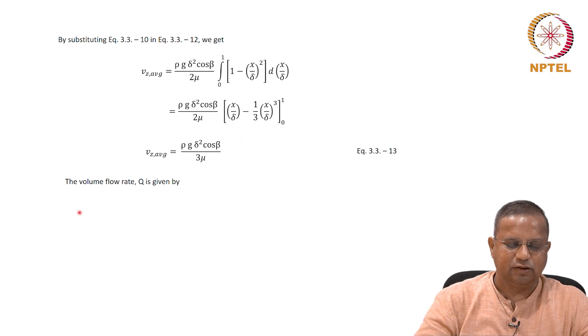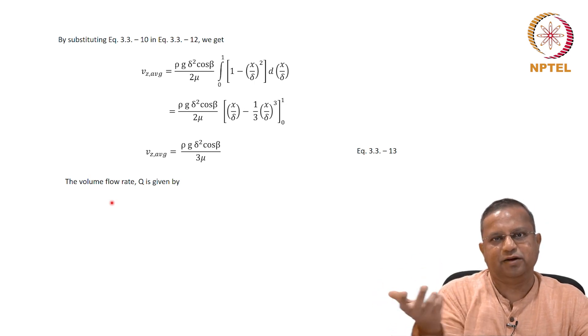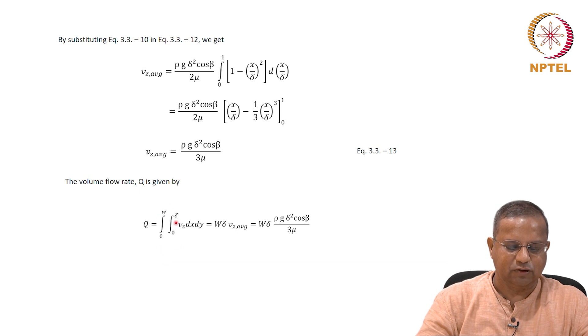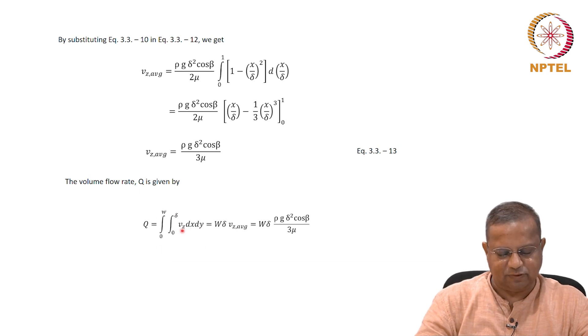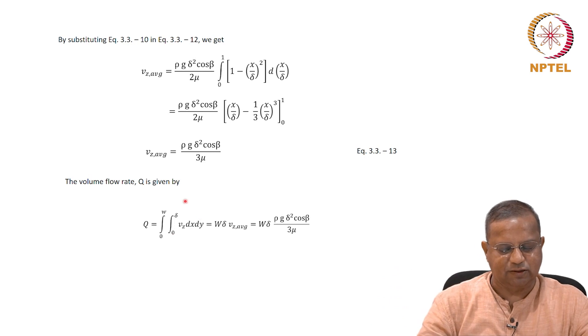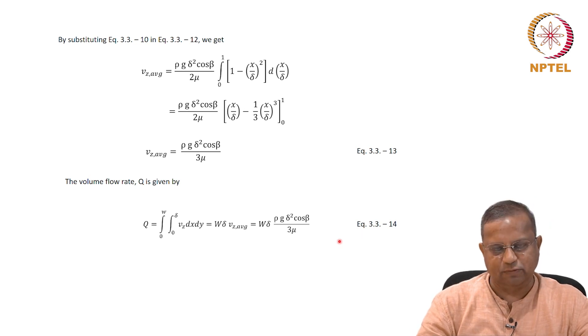We are also interested in the volumetric flow rate. The volumetric flow rate is nothing but the average velocity times the area. Area times velocity is flow rate. Formally speaking, you can go from 0 to w, 0 to delta vz dx dy. At every point, you take the velocity multiplied by the area and take the total of the whole thing. If you do that, you will get w delta rho g delta squared cos beta by 3 mu, equation 3.3-14. Therefore, we found initially the shear stress profile in this case, the velocity profile, then the maximum velocity expression, the average velocity expression, and the volumetric flow rate expression.